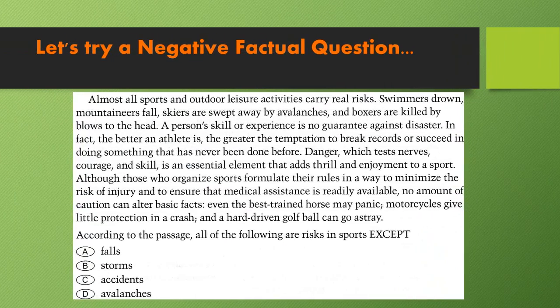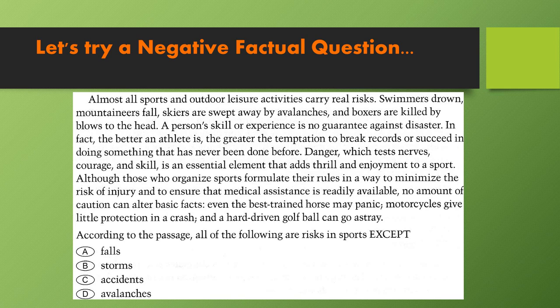Now let's try a Negative Factual Question. Here is a paragraph about sports and its risks, and here is the answer. To begin with, you know it's a Negative Factual Information Question because of the word EXCEPT in capital letters. So three of the choices are going to match information in the paragraph, and only one will not. Let's see how many correct choices we can find by scanning for keywords that appear in the answers, like mountaineer's fall, risks, avalanches, and so on.